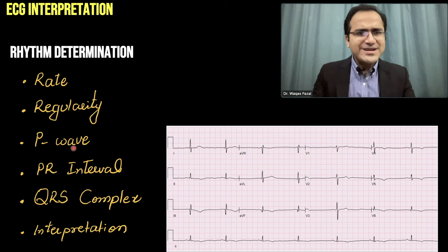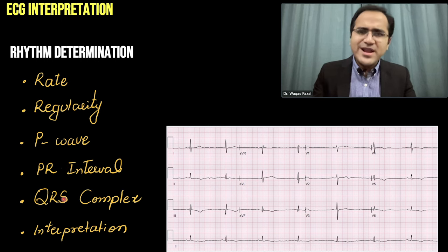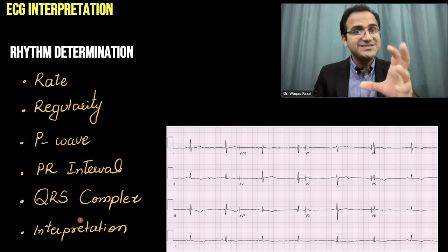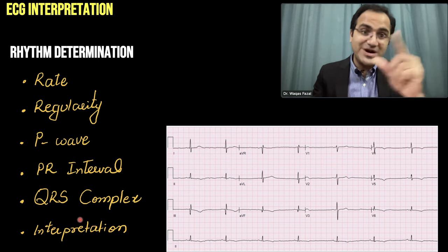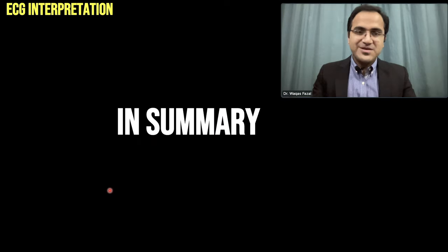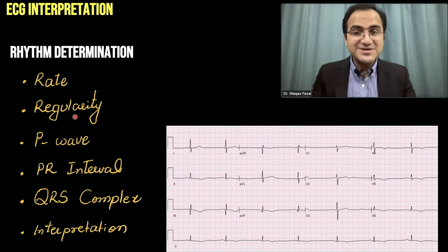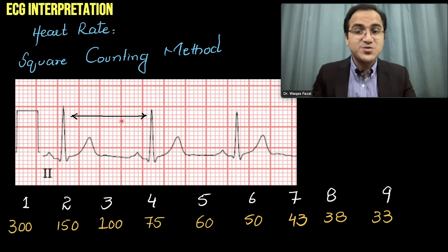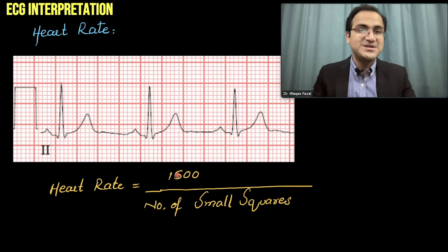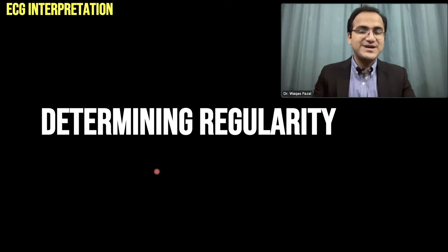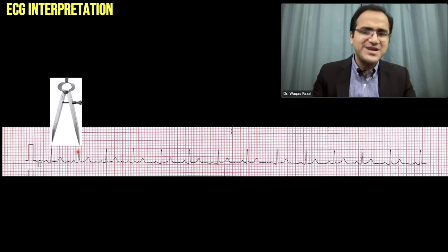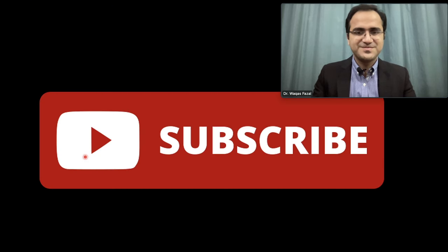In the next video we will discuss how to determine whether the P wave is normal, whether the PR interval is normal, whether the QRS is wide or narrow, and how to write an interpretation — practicing many ECGs from easy to difficult to master rhythm determination. In summary: we covered rate and regularity, the square counting method, 300 method, 1500 method, six second method, and regularity assessment using calipers, a ruler, or counting small boxes.